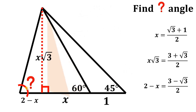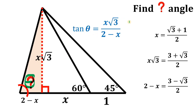Consider this right triangle. We want the measure of this unknown angle, so let's call it theta. We have theta, the unknown angle, the opposite side, and the adjacent side. So we will use the tangent function. Tangent of theta is simply equal to the opposite side — x times square root of 3 — all over the adjacent side, 2 minus x. And we know the values of those expressions: x times square root of 3 is 3 plus square root of 3 over 2, and 2 minus x is simply equal to 3 minus square root of 3 all over 2.